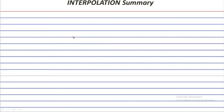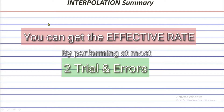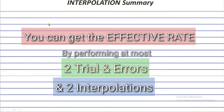The ultimate goal for summarizing the interpolation process is not just to summarize but also to remind you of very important things so that you'll be able to get the effective rate faster. If you don't follow the process I'll tell you, you'll be wasting time in the trial and error phase. If you follow, you can get any effective rate by performing at most two trial and errors and two interpolations only.